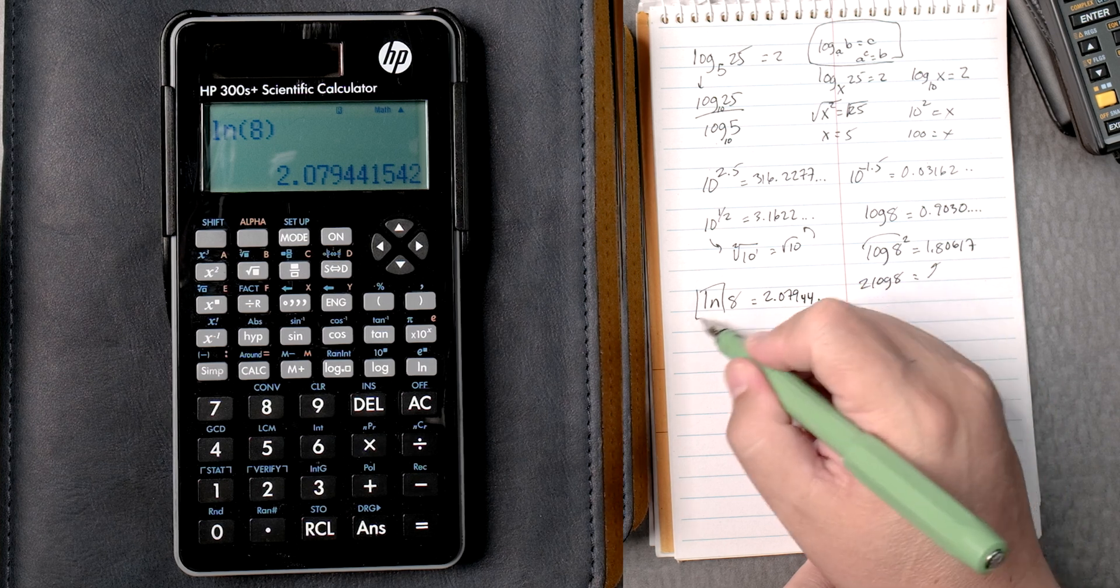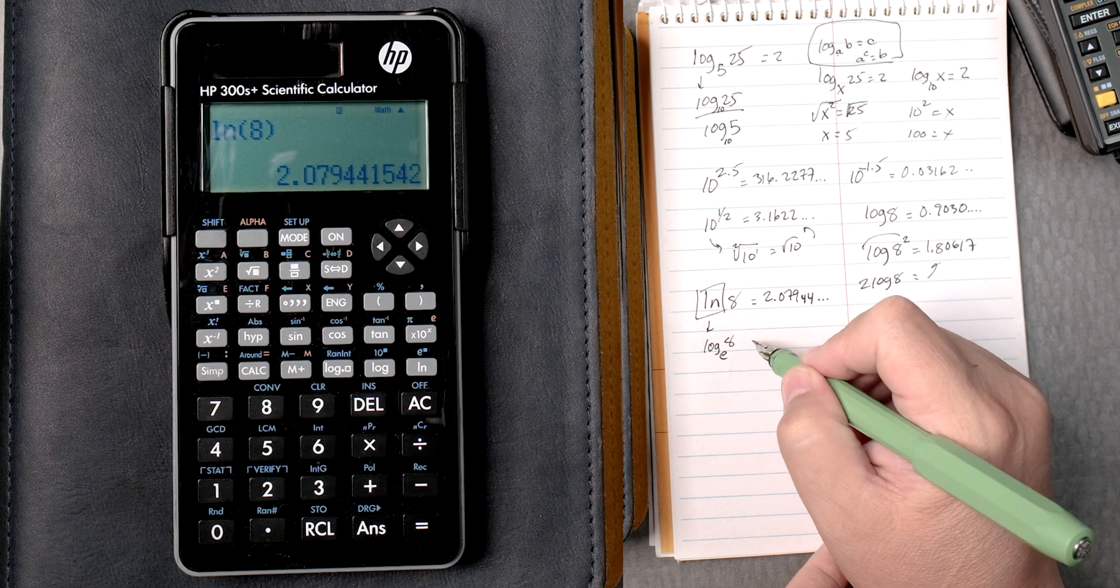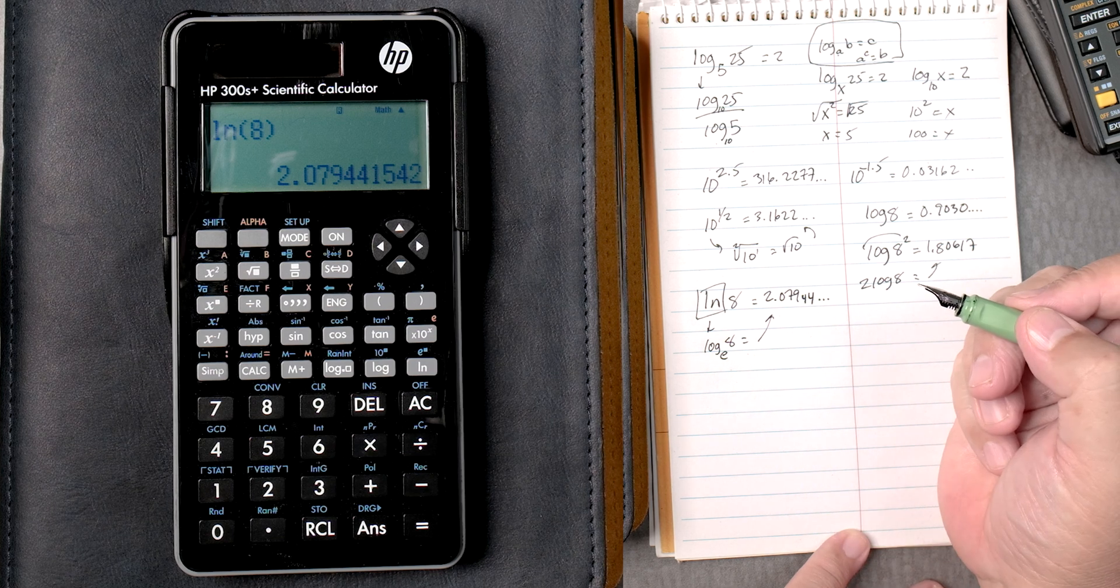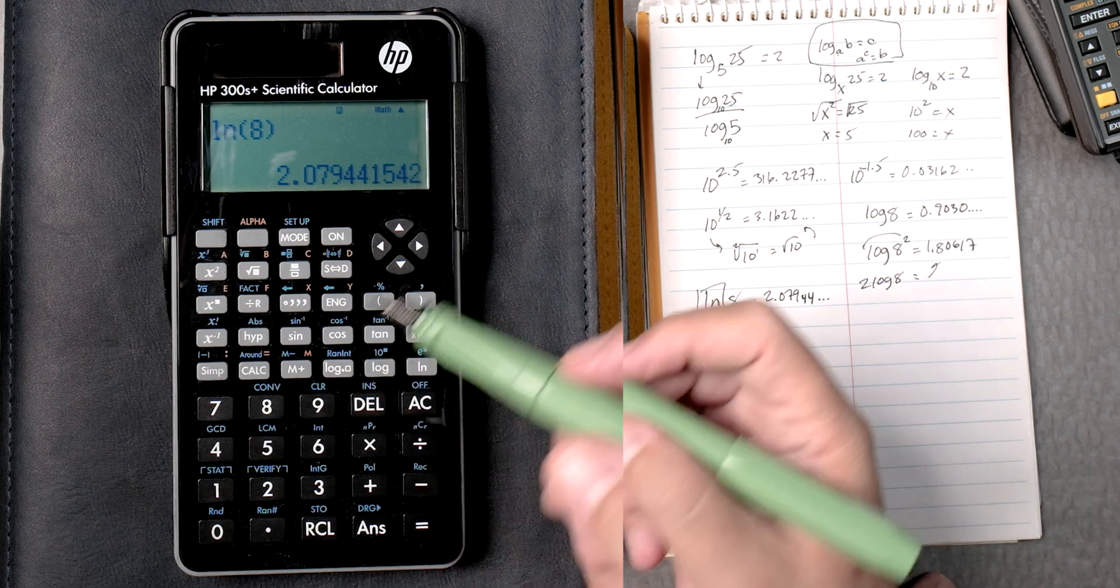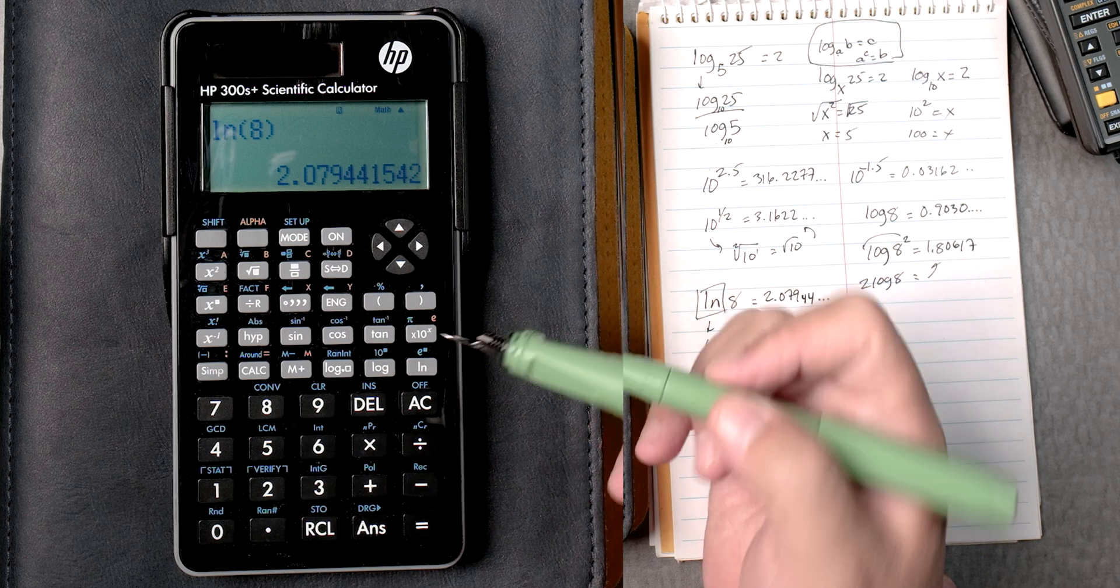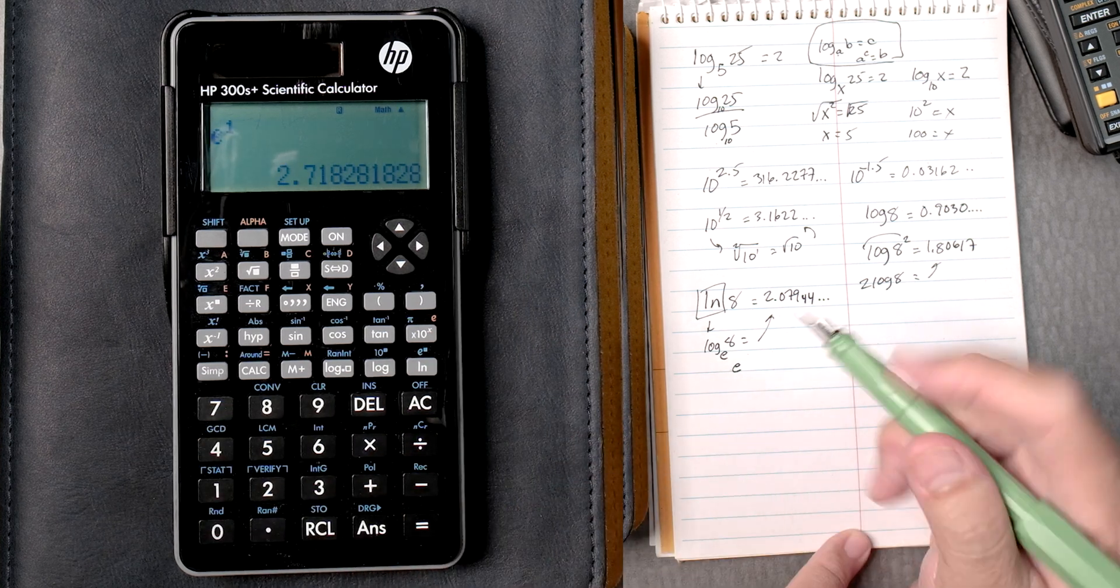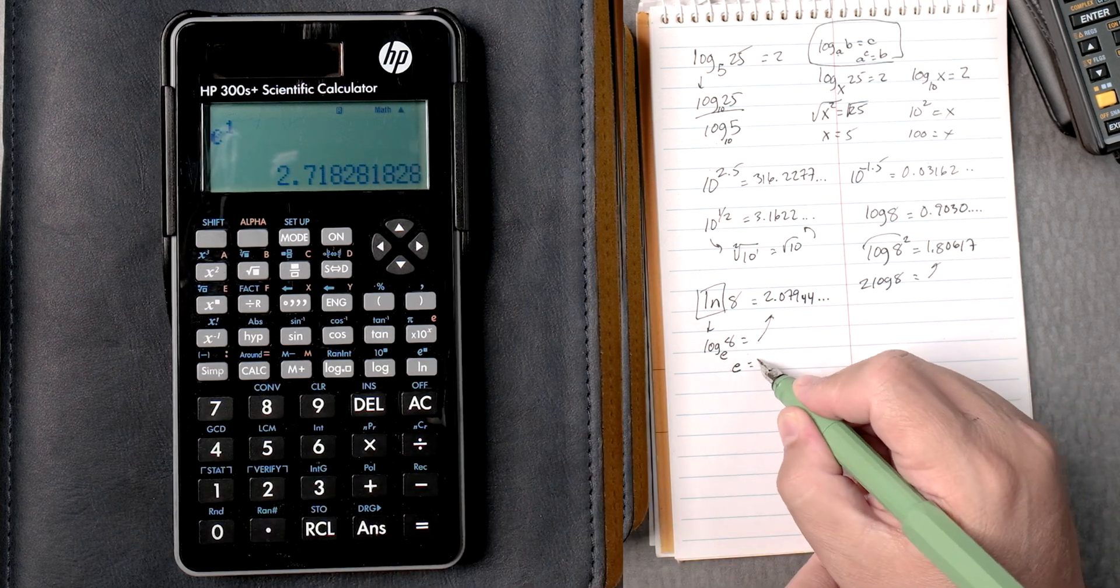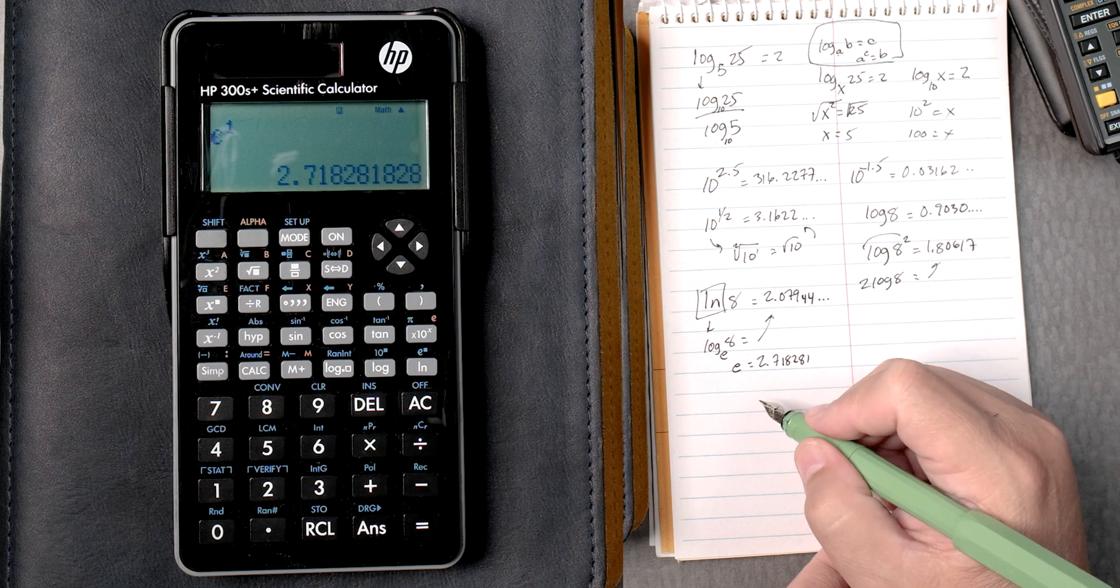This natural log really is the log of base e of 8, which is the same answer as that. Now what's e? Well, if you look at the natural log, there's an e squared. So if you go shift e squared, you put a 1 in there, it gives you the value. So the log of base e is 2.718281.